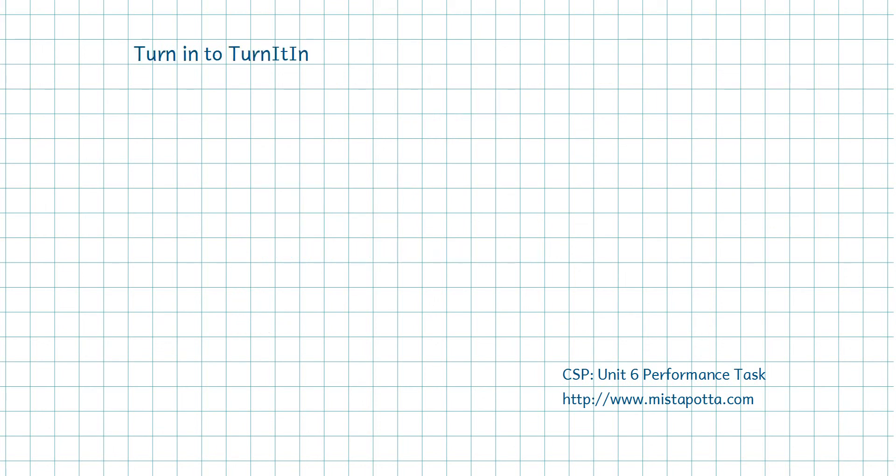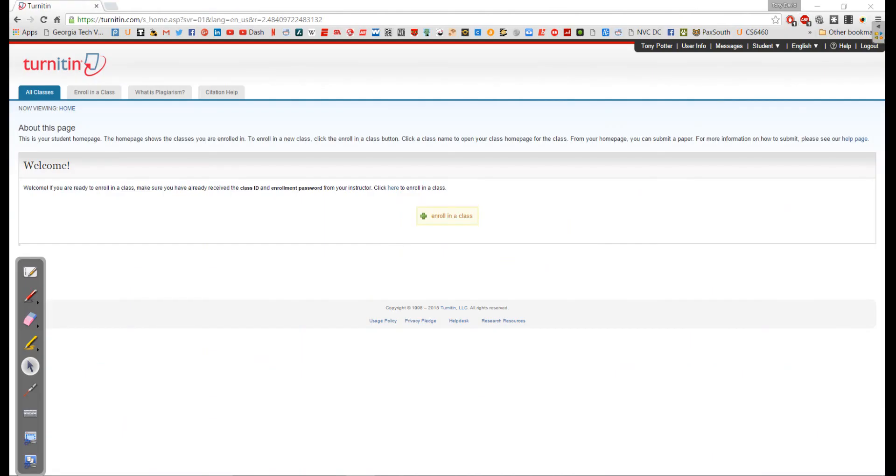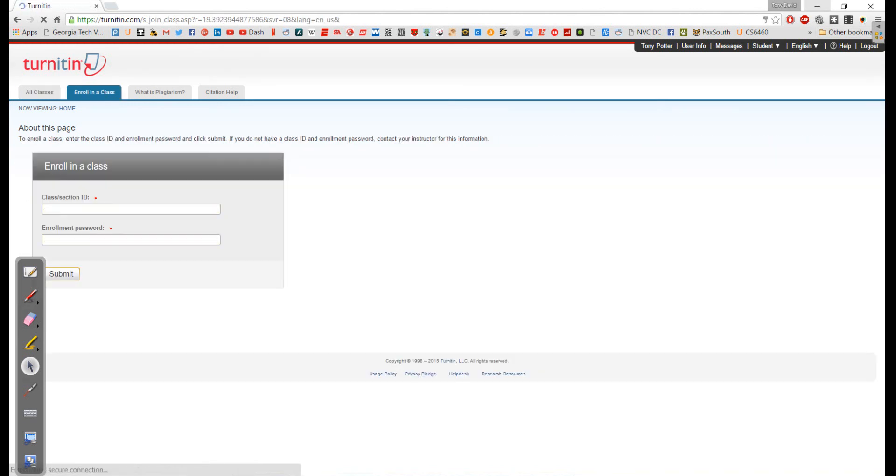Now, once you've done that, you're going to have to turn in your speech to turnitin.com. Now you're going to type up your paper using the Google Drive, but instead of sending it to a PDF to your teacher, you're actually going to go to the website turnitin.com and I want to show you what that looks like. So I'm logged in here as a student and I'm going to go ahead and enroll in the class. Now your teacher is going to give you information on how to enroll in this class.